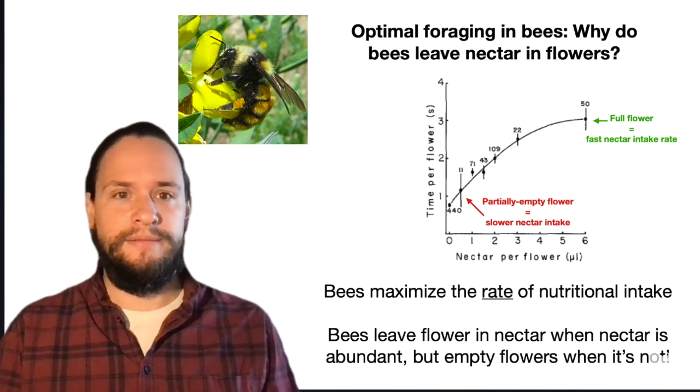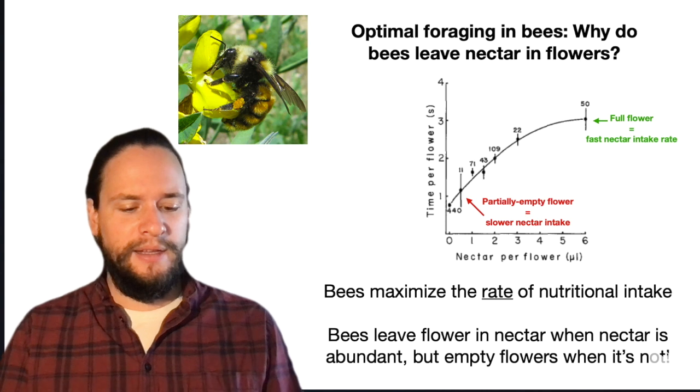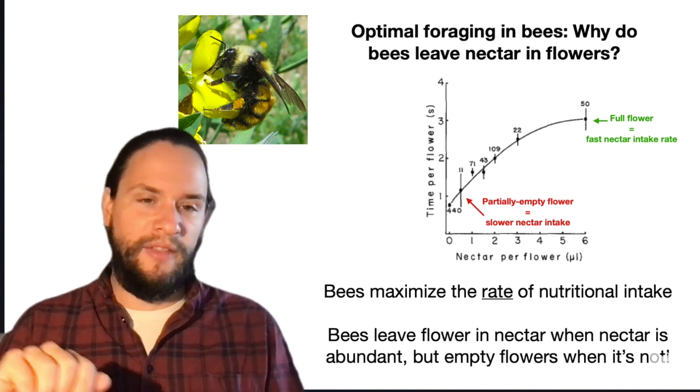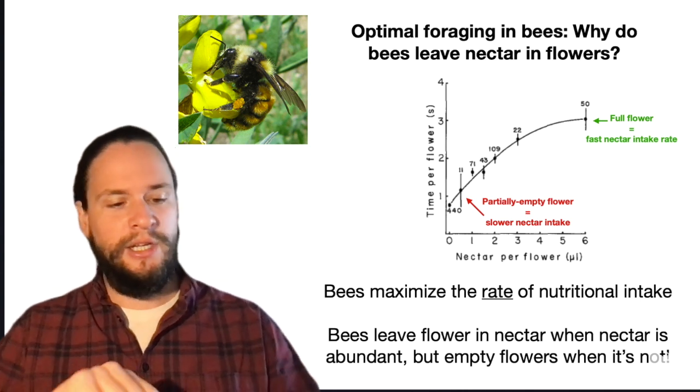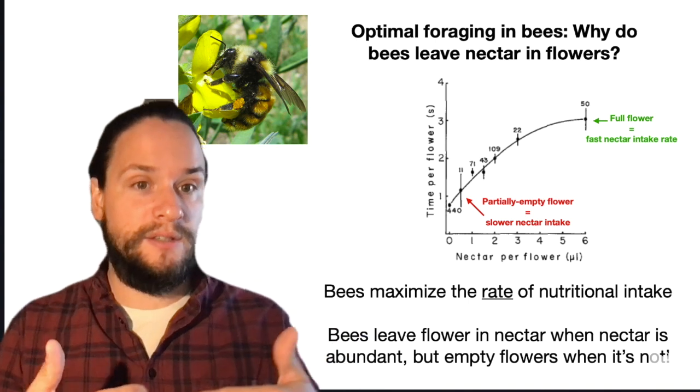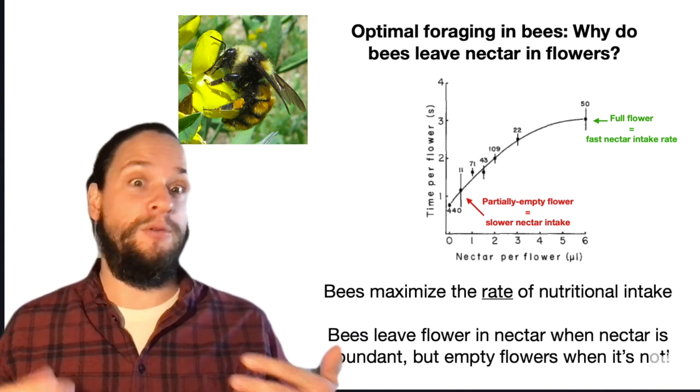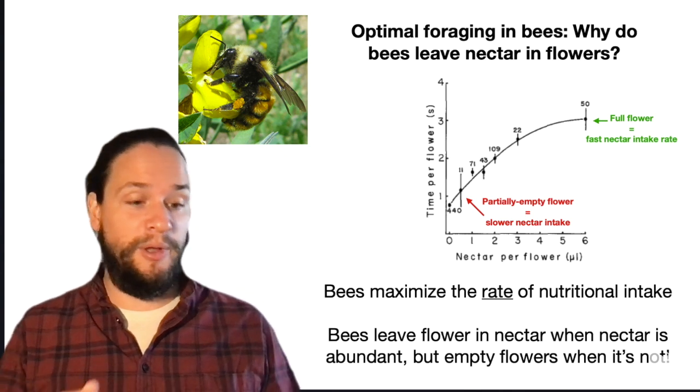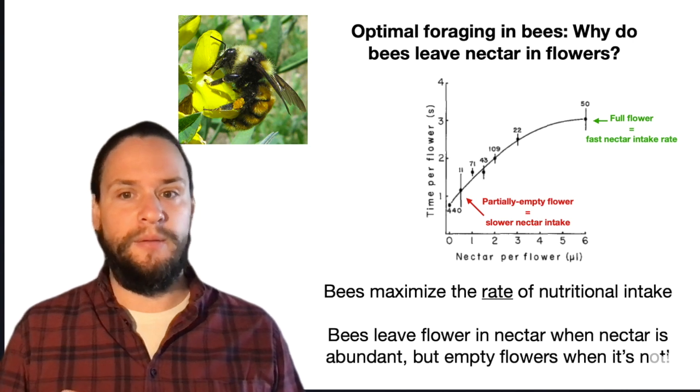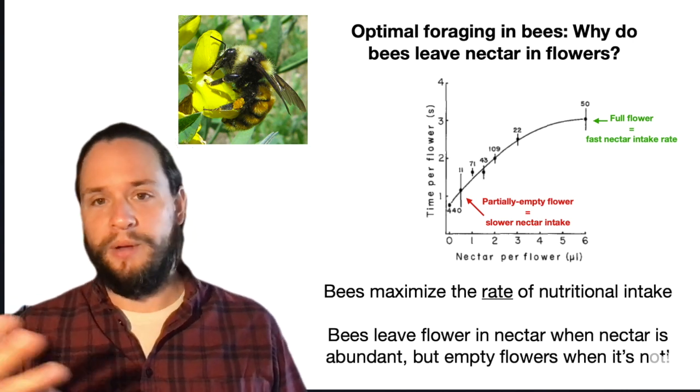Imagine eating yogurt out of a plastic container, right? In the beginning, the first few bites are nice, full, easy to get food out, and then you're toward the end because you're getting hungry, and now you're really scraping the last little bits out. You can imagine that that is slower, right? And if you had a bunch of those in a row and you were really trying to eat as fast as possible, you might not worry about getting the last little bits of each, the bottom of each container, right? So this is basically what flowers are doing or what bees are doing.